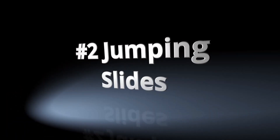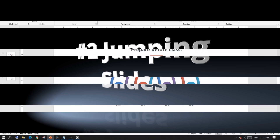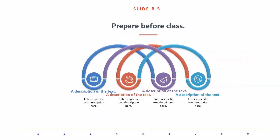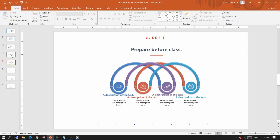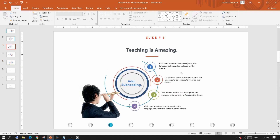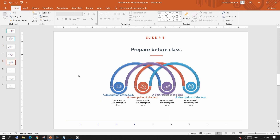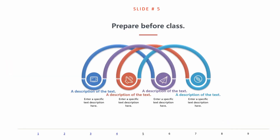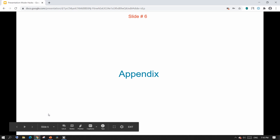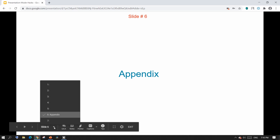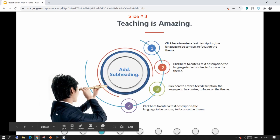Jumping slides or page navigation: how many of you had the situation where you had to go a few slides back or to the appendix to answer a question? Many people come out of presentation mode, scroll to the required slide, then come back and start presentation mode again. Well, there are better ways to do that. In Google Slides it's very simple — from the bottom left menu select the slide number that you wish to go to.